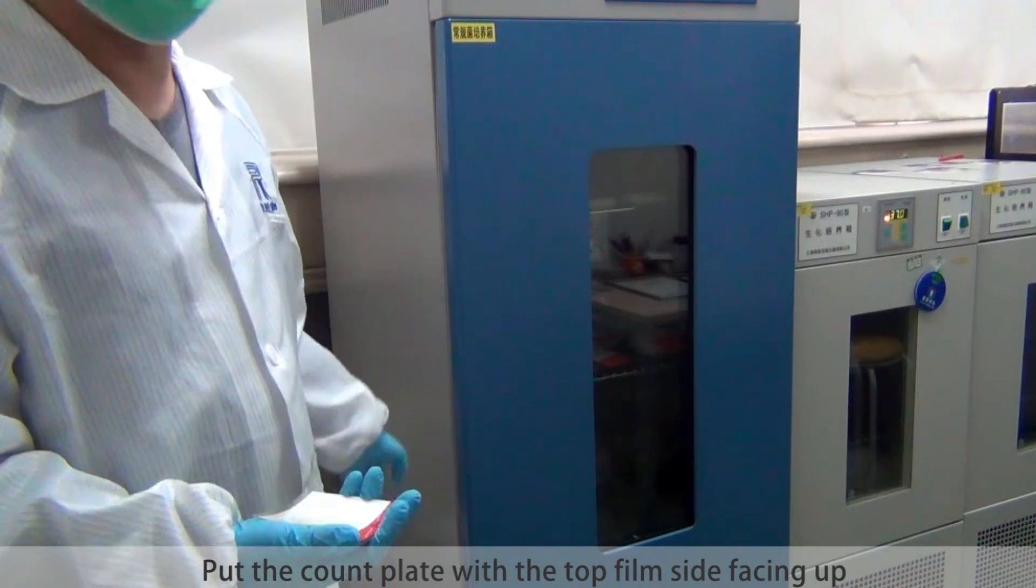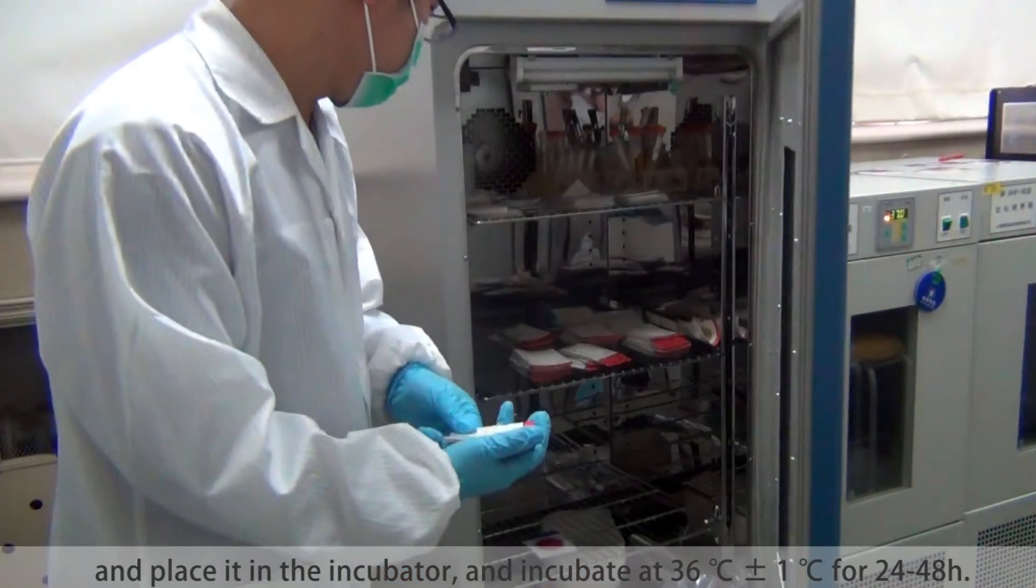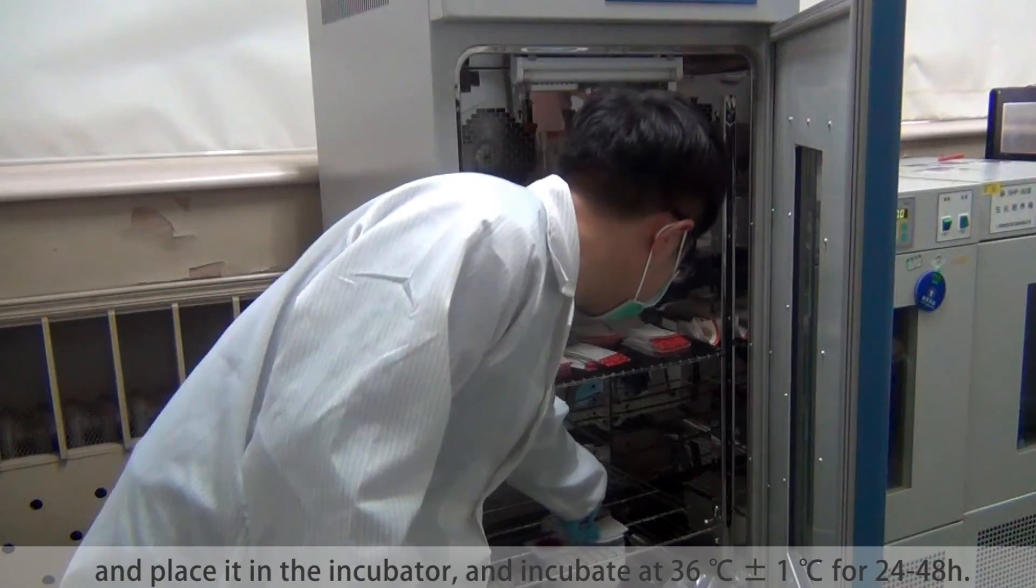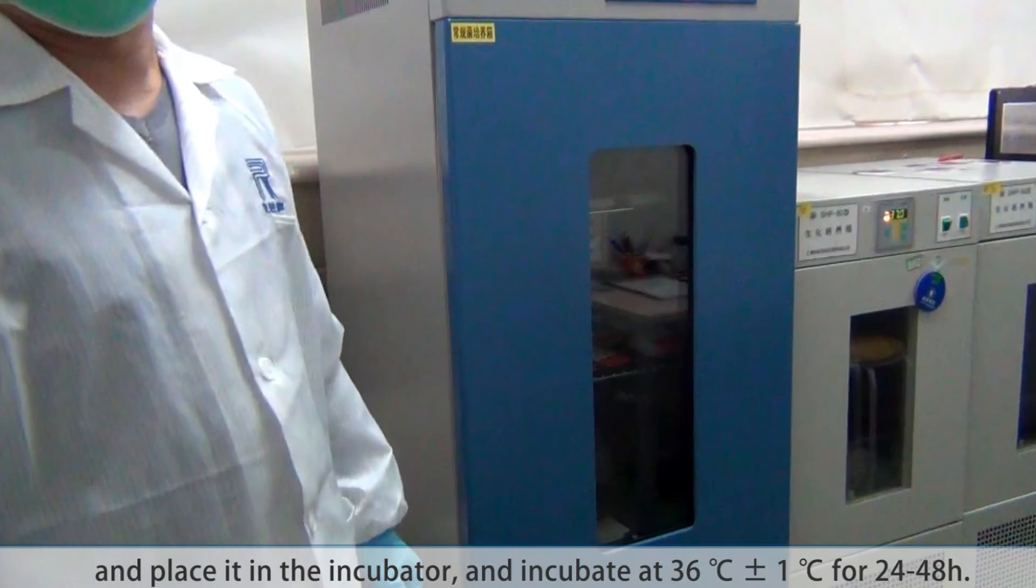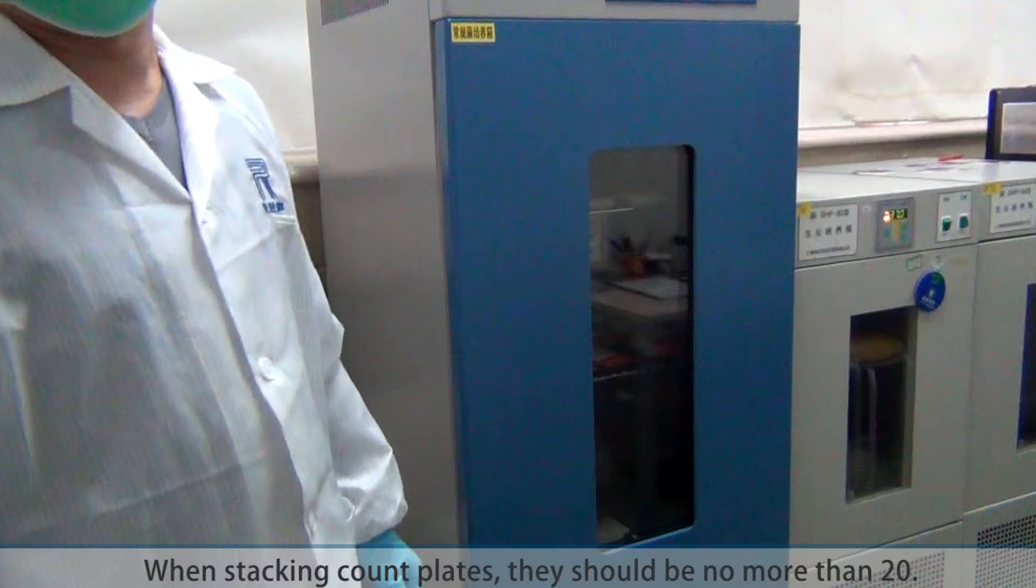Put the cut plate with the top film side facing up and place it in the incubator at 36 degrees centigrade, 1 degree above or below for 24 to 48 hours. When starting cut plates, there should be no more than 20.